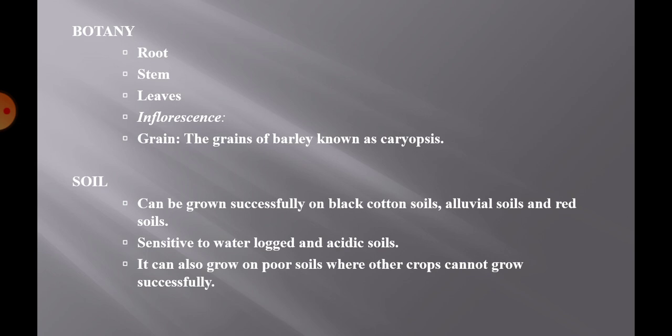Regarding soil, pearl millet can be grown on a wide variety of soils, but being sensitive to waterlogging, it gives a very good response to well-drained sandy loams and loamy soils. This crop is also sensitive to acidic soils, but is successfully grown on black cotton soils, alluvial soils and red soils. It can also grow on poor soils where other crops cannot grow successfully.